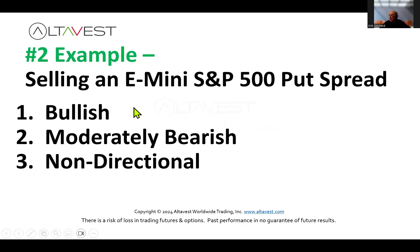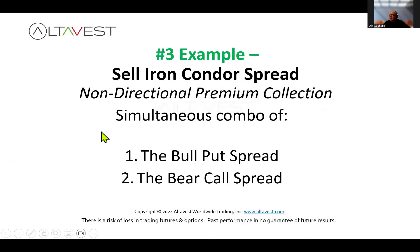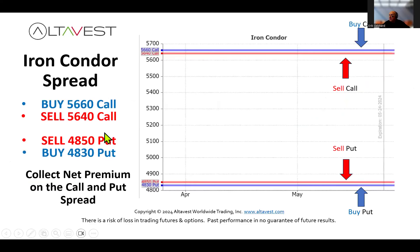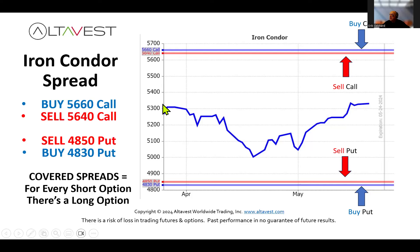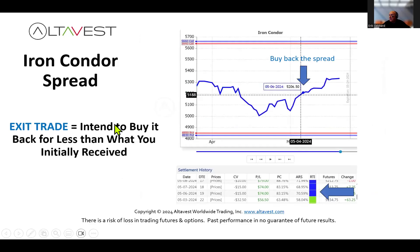It works the same way with a put spread — sort of the inverse. You're selling this out-of-the-money put spread and you look for the market to stay above this area, and it did. Now for a non-directional example: this is called an iron condor strategy. It's just a combination of the put and call spread that you saw. Here's the condor: you sell an out-of-the-money call spread and you sell an out-of-the-money put spread, collecting premium on both sides. You expect the market to stay within this wide range.